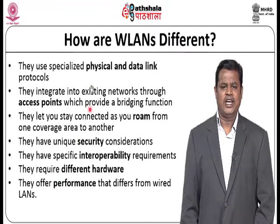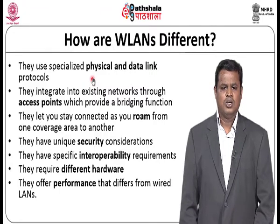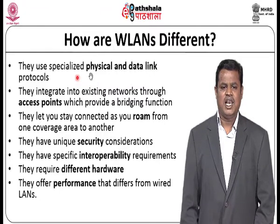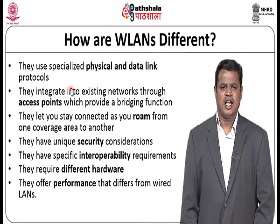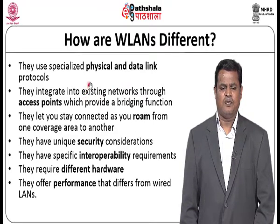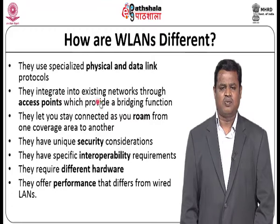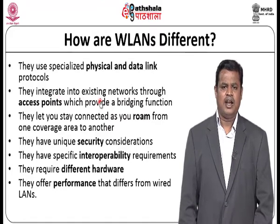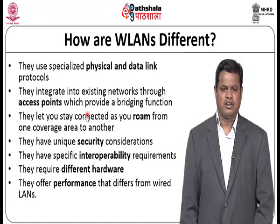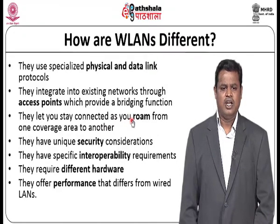What are the benefits of WLAN? Here we can see that they have specialized physical and data link layers. We know there are 7 layers in the OSI model; the lowest two — the physical layer and data link layer — have protocols entirely different from the wired network, and it provides integration with the existing network. No special infrastructure is needed; we can provide a bridging function to make the end user access the internet. Mobility is a major feature where you can roam from one coverage area to another without any disturbance in connectivity.